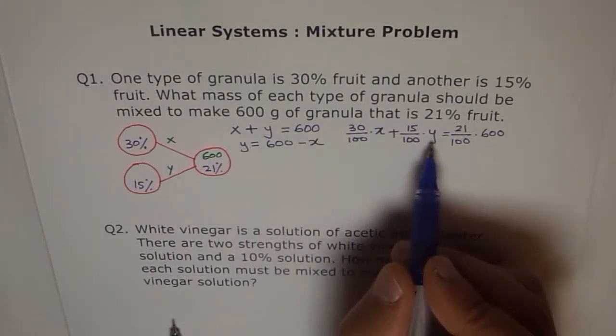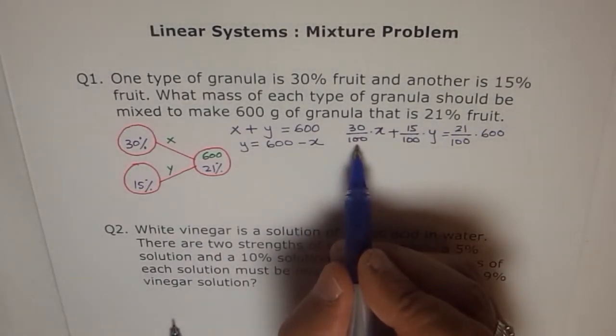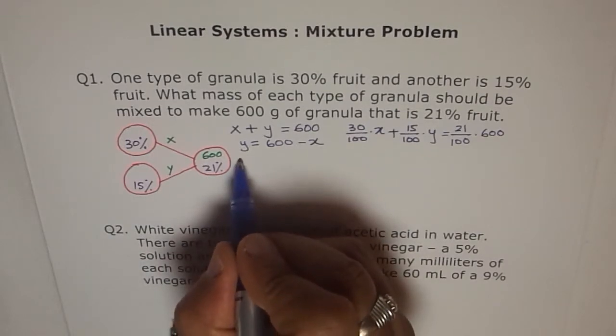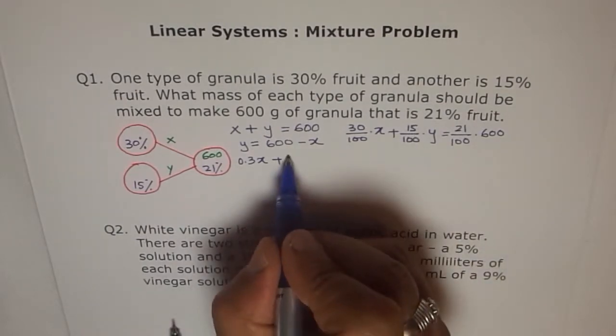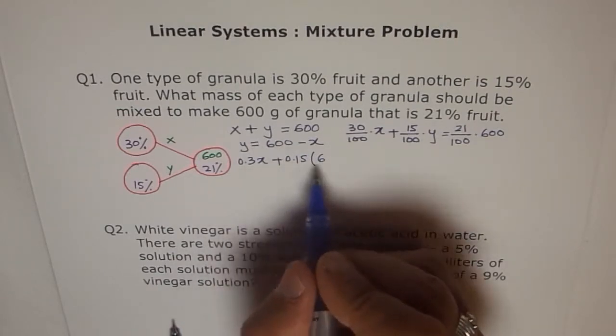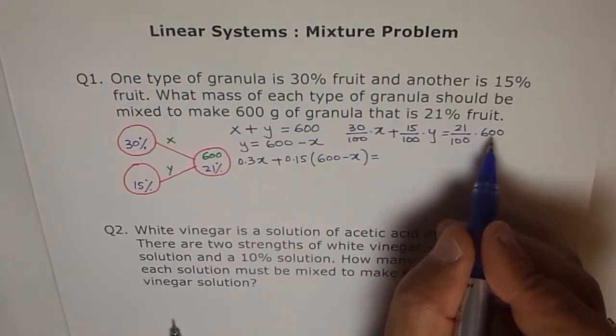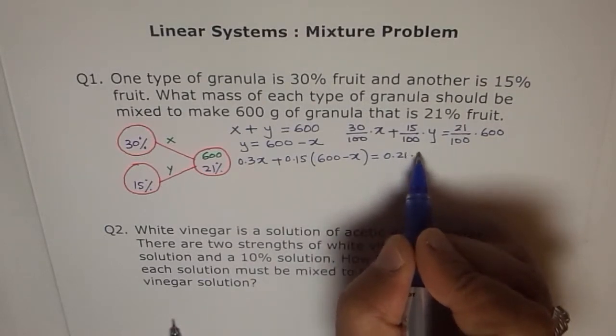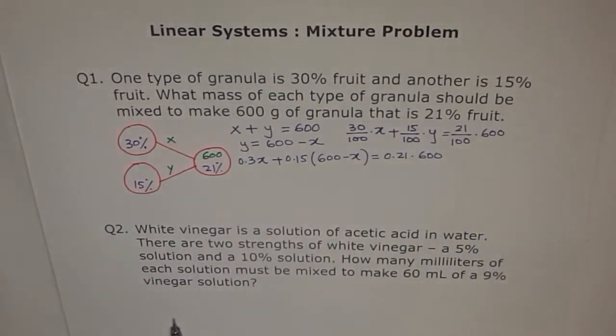And then solve for x. Then we will have only one variable with us. So let's do that. 30 over 100 is 0.3, so write 0.3 of x plus 15 over 100 is 0.15, so 0.15 of y. Instead of y, I will write 600 minus x. So we are substituting from our equation into another so that we have an equation in only one variable. This is equal to 21% of 600, that means 0.21 of 600. Now we have an equation in one variable. Now it is very simple for us to solve. We can use our calculator and solve it.